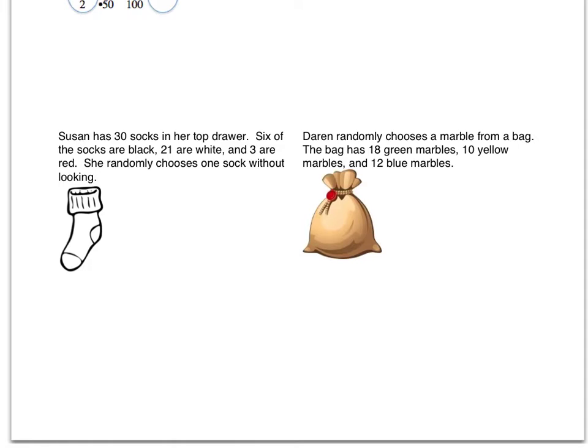So here we have, Susan has 30 socks in her top drawer. Six of the socks are black, 21 are white, and three are red. She randomly chooses one sock without looking. So in this probability, we're dealing with a total of 30 socks.